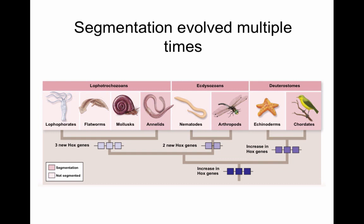A similar story applies to the presence of coeloms. We used to use the presence of a pseudocoelom or the lack of a coelom as a phylogenetic characteristic, but now we know that pseudocoeloms actually appeared multiple times independently. The same is true of true coeloms — protostomes form their coelom one way and deuterostomes form it another way. This is an important thing to keep in mind when analyzing phylogenies: which traits reflect shared common descent versus which traits evolved independently, as in the case of segmentation and pseudocoeloms.